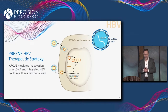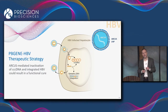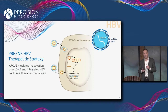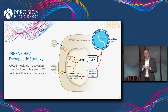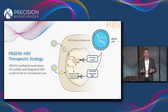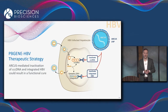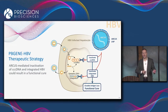The strategy that we're using here is using a lipid nanoparticle to deliver an Arcus enzyme that recognizes a conserved site in the HBV genome. That nuclease then cuts its target site in CCC DNA, or in cases where CCC DNA was able to integrate into the genome, it inactivates the virus, leading to durable antigen loss and hopefully a functional cure.